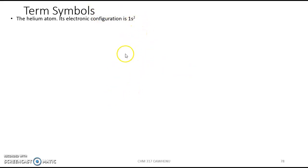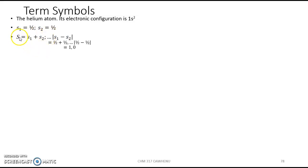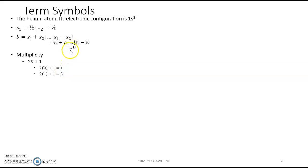Now let's look at the helium atom with configuration 1s². It has two electrons, and for each electron s = 1/2. Note the difference between s (always 1/2 for an electron) and mₛ (which can be +1/2 or −1/2). The resultant spin S can range from 1/2+1/2=1 down to 1/2−1/2=0. The multiplicity when S=0 is 2×0+1=1 (singlet), and when S=1 it is 2×1+1=3 (triplet).